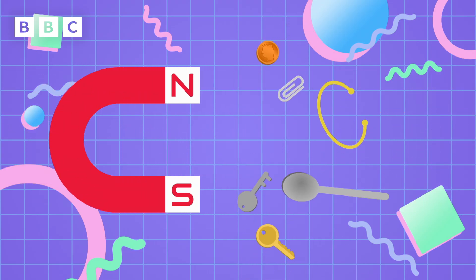Magnetic materials are always made of metal, but not all metals are magnetic. For example, gold isn't magnetic.